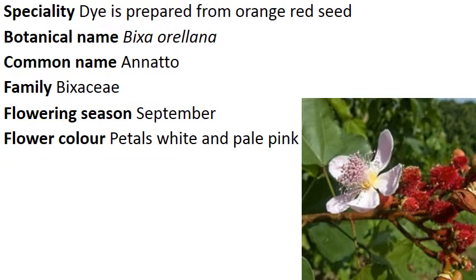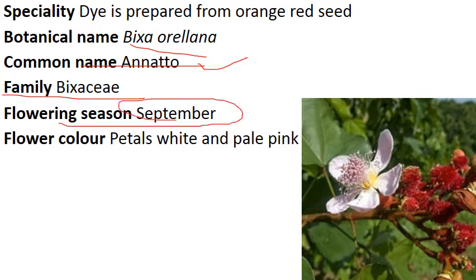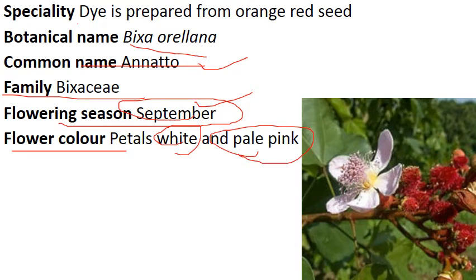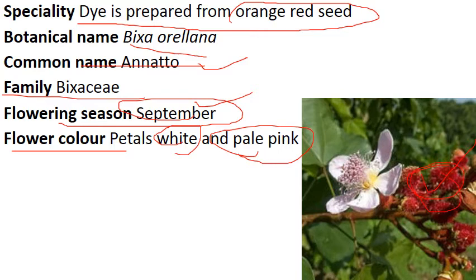Now comes to Bixa orellana. Common name is Annatto. In the market the trade name is Annatto dye. Family is Bixaceae. Flowering season is September — here is an exception, as the flowering season is in the rainy season. Flower color is white; somewhere you can see pale pink. Special feature: dye is prepared from the orange-red seeds. This is the fruit — inside it, orange-red seeds are there, and Annatto dye is made from these seeds. The flower is white and pale pink.